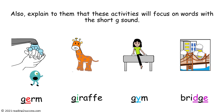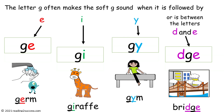Also, explain to kids that these activities will focus on words with the soft G sound, as in germ, giraffe, gym, and bridge. It is important for kids to know that the letter G often makes the soft G sound when it is followed by E, I, Y, or it is between the letters D and E.